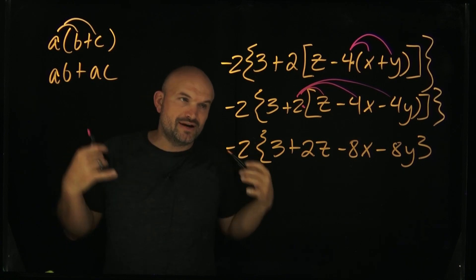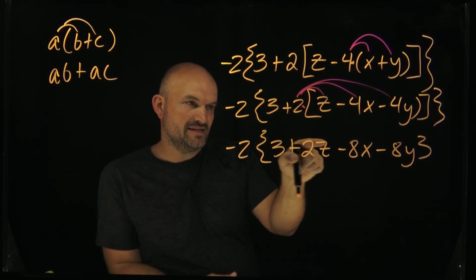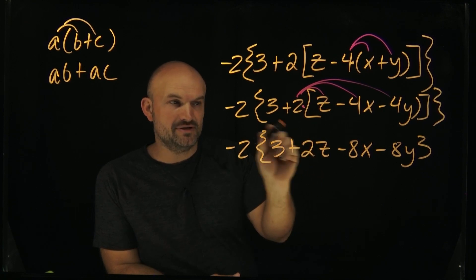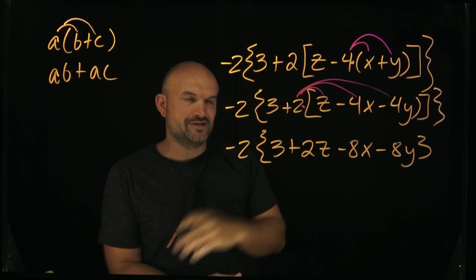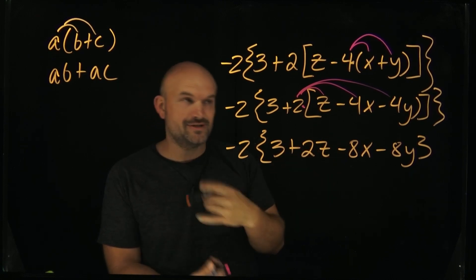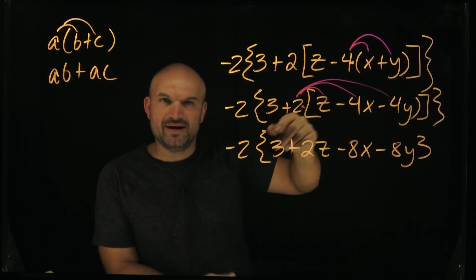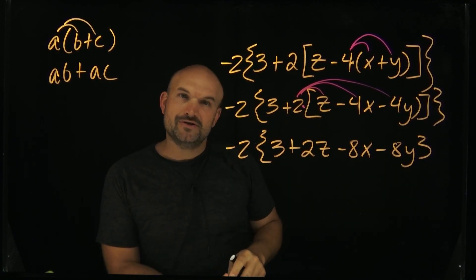And again, now we want to look and see if there's anything that we can simplify. Be careful. I know my penmanship is not the best. That is a z, not a seven. So at first when I looked at it, I'm like, oh, I can combine like terms. No, they're not like terms. That's a three and that's a two z, not a 27. Sorry about that. Just want to make sure I'm confirming. We have all variables and a number now. Again, nothing is the same.